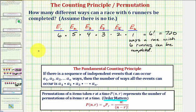If we have six permute six, notice n is six and r is also six. So we have n factorial, or six factorial, divided by n minus r factorial, which is six minus six factorial, or six factorial divided by zero factorial.